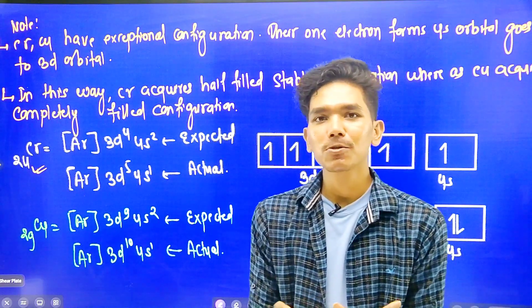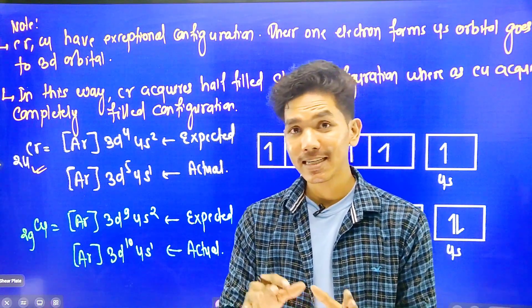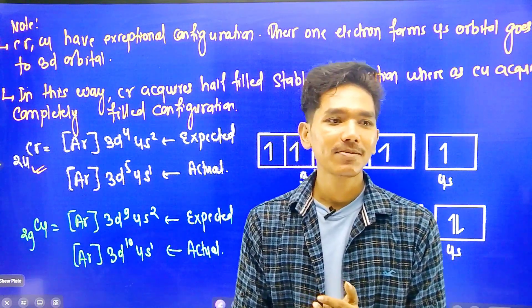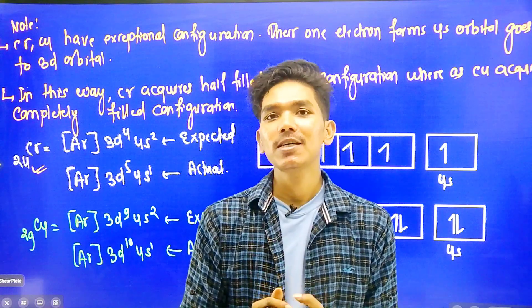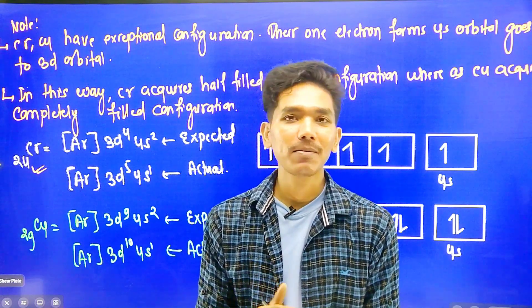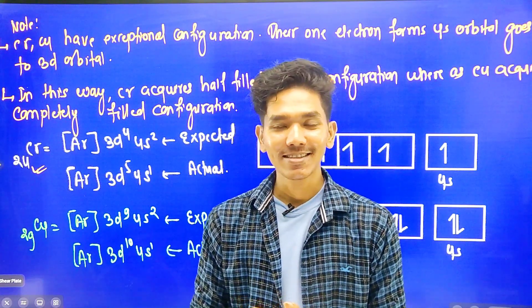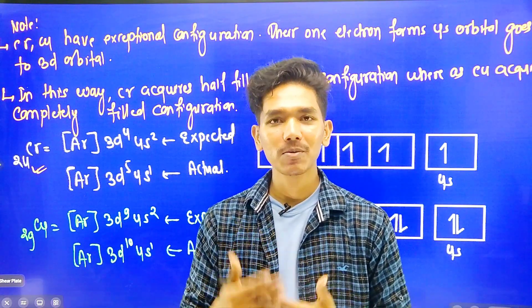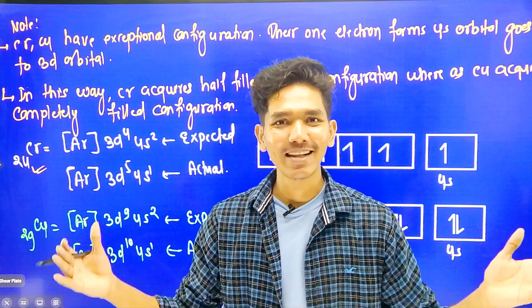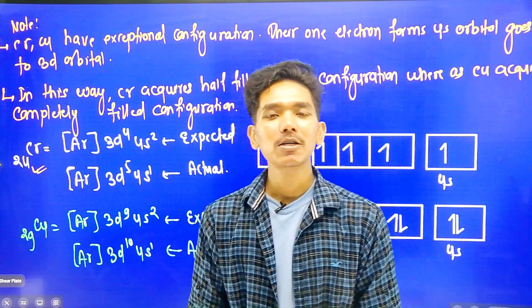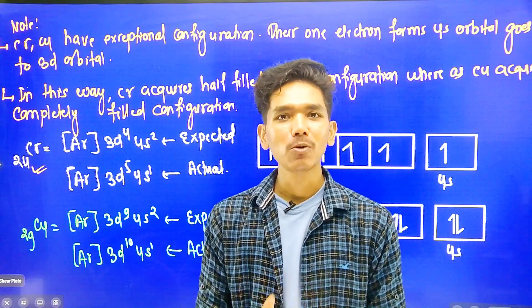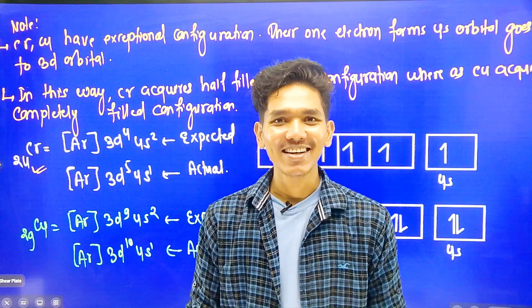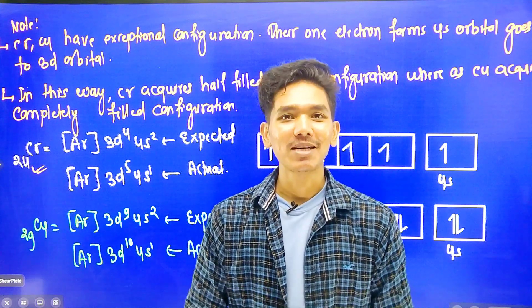That is all about the basic introduction of transition metals. Next, we will start with the oxidation state, catalytic properties, atomic radii, and crystal field theory, including octahedral splitting. We will discuss these topics one by one in the next video. If you have any doubts or confusion, please comment. Thank you very much!